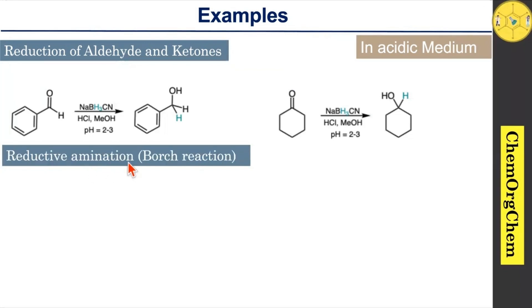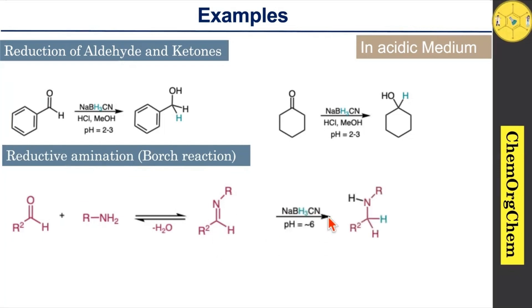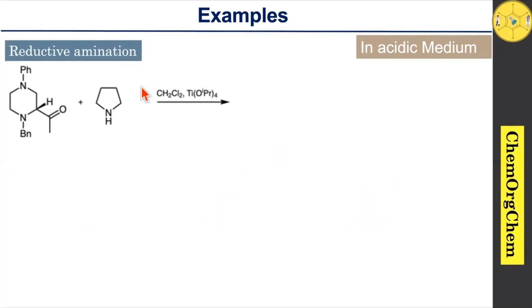Next, we move on to reductive amination — sometimes people call this the Leuckart reaction. According to this reaction, an aldehyde or ketone reacts with an amine to generate an imine. That imine is readily reduced by sodium cyanoborohydride under a pH level of approximately 6, providing the corresponding aminated product.